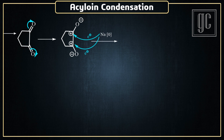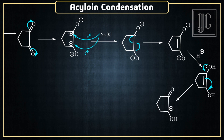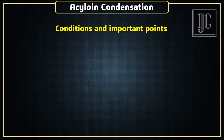This carbocation is again reduced by sodium metal and a free electron is generated. Both free electrons react and one carbon-carbon double bond forms. The negative charge on oxygen is neutralized by the solvent. Finally, followed by keto-enol tautomerism, the final product alpha hydroxy ketone is formed.